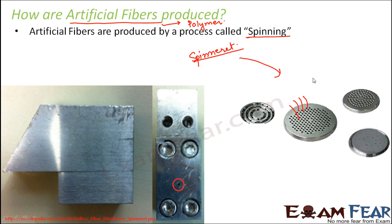Since the polymers coming out of the spinneret are viscous and liquidy, they are then solidified. When they solidify, they form long thin threads, and those threads are nothing but the fibers. This entire process is known as spinning, because the polymer spins through the spinneret device and comes out as long threads.